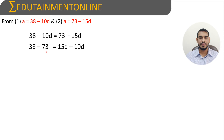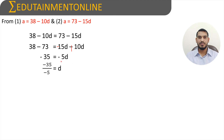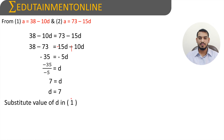Transposing 73 to the left and -10d to the right: 38 - 73 = 15d - 10d, which gives -35 = 5d. Dividing both sides by -5 (negatives cancel), we get d = 7.